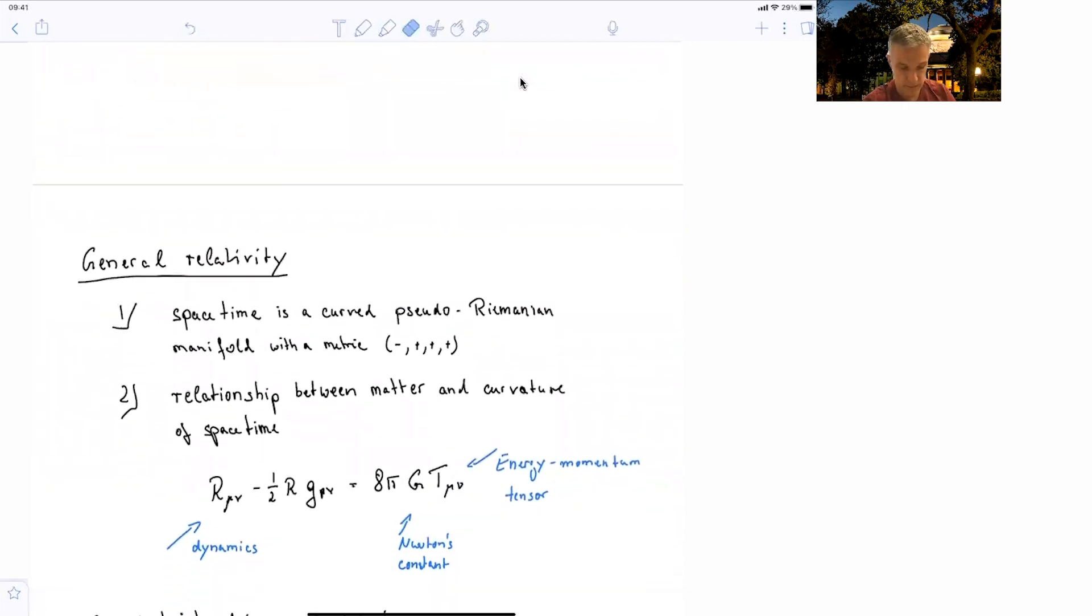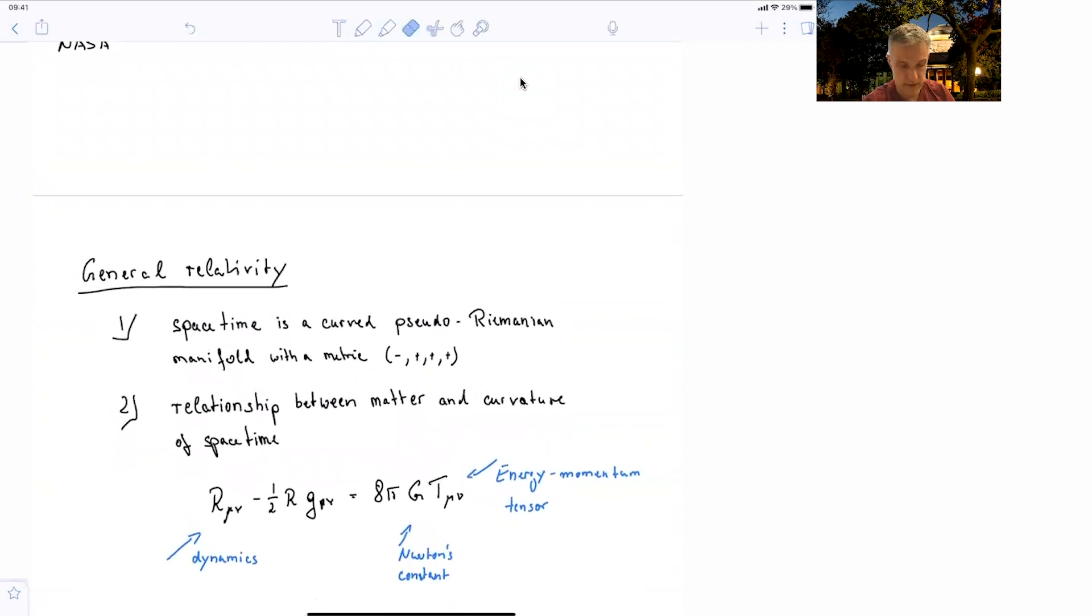If you want to summarize general relativity, you can first say that space time is curved and it follows the pseudo-Riemannian manifold with a specific metric. We have seen the metric before. It's minus, plus, plus, plus, plus. The relationship between matter and curvature is given by the Einstein equation. Here I'll give you a slightly different form, where there's the dynamics again on one side and the energy and momentum on the other side.